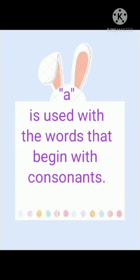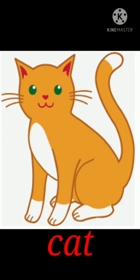A is used with the words that begin with consonants. Now look at some examples. This is a picture of cat. The starting letter of cat is C, which is a consonant. So we will use A — a cat.